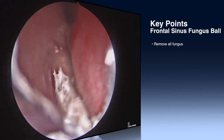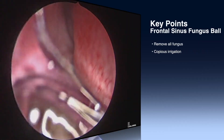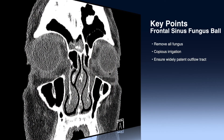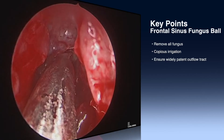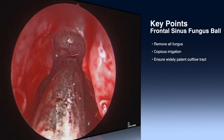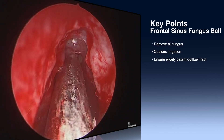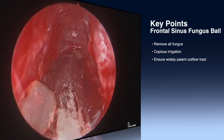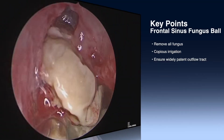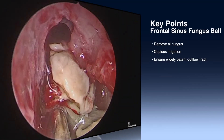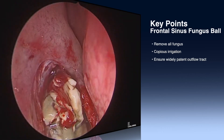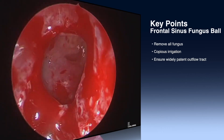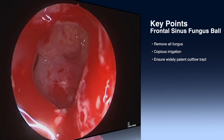Key points for frontal sinus fungus balls include: number one, removal of all of the fungus within the sinus itself. This can be done with suctioning; irrigating can be very successful and often multiple rounds of irrigation can be helpful, as well as ensuring a widely patent outflow tract. This concludes our surgical video on the frontal sinus fungus ball. Thank you for watching.